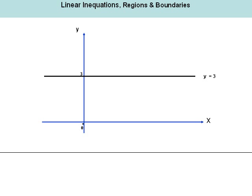We have drawn a line at y is equal to 3 — that's a line parallel to the x-axis. We're going to identify an area below this line and define this area as a region. Everything below this line is a region, and that region is defined by the inequation y is less than or equal to 3.